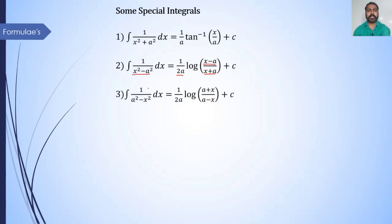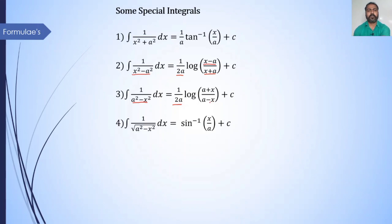Third formula: integration of 1 upon a² minus x² dx is equal to 1 upon 2a times log of (a plus x) divided by (a minus x), plus c. Here a² minus x² factorizes as (a plus x)(a minus x). Since there are two linear factors, starting with 1 upon 2a, the positive factor (a plus x) is in the numerator and the negative factor (a minus x) is in the denominator, plus c.